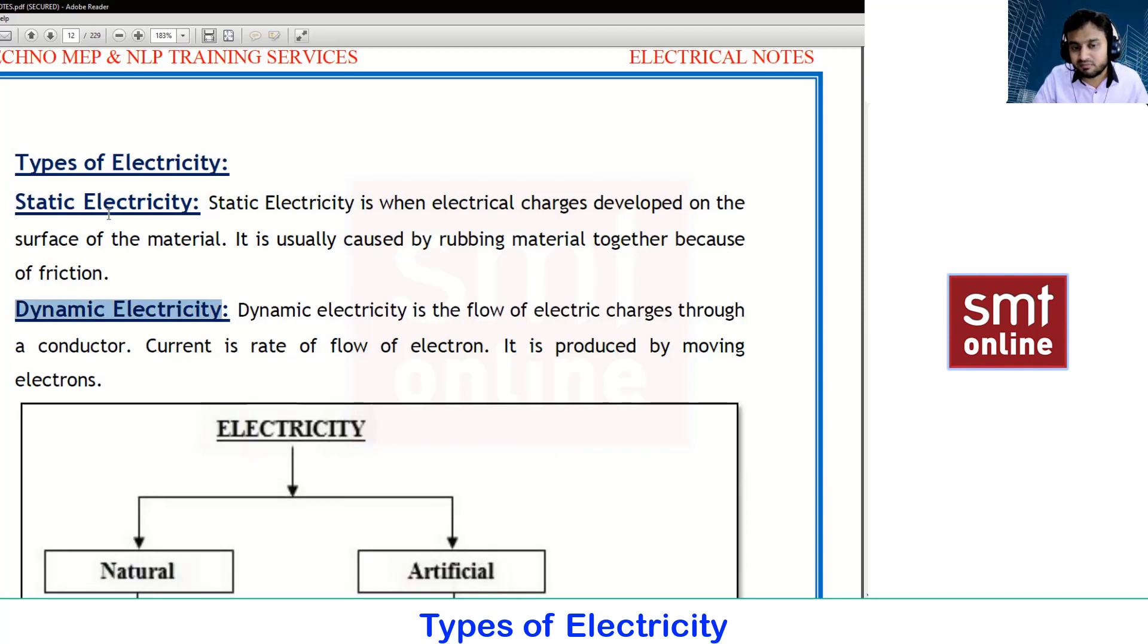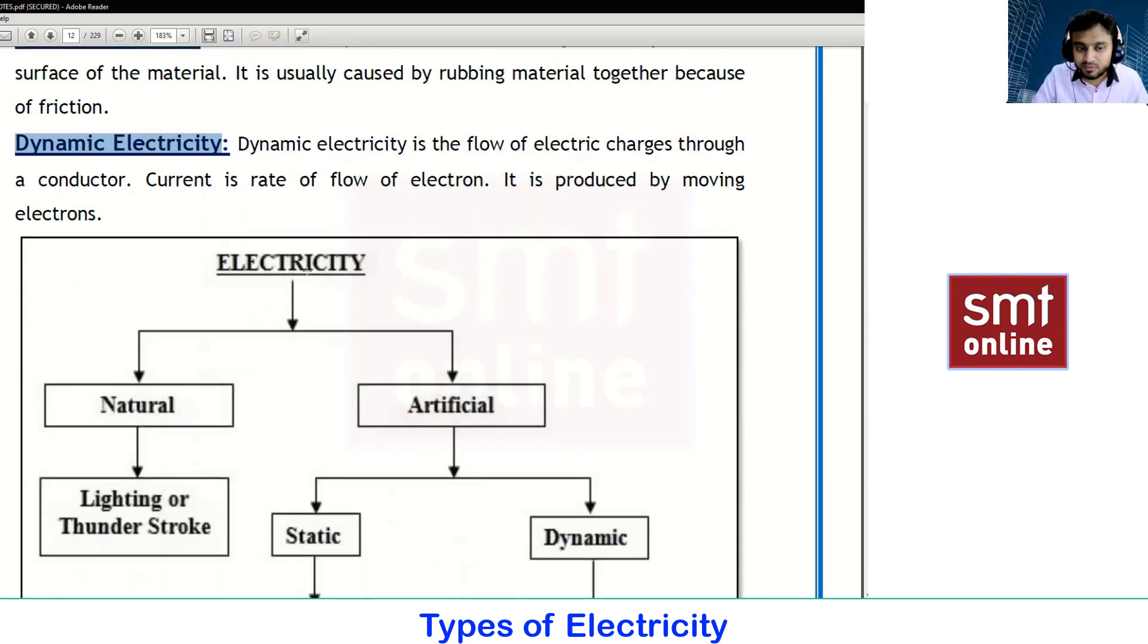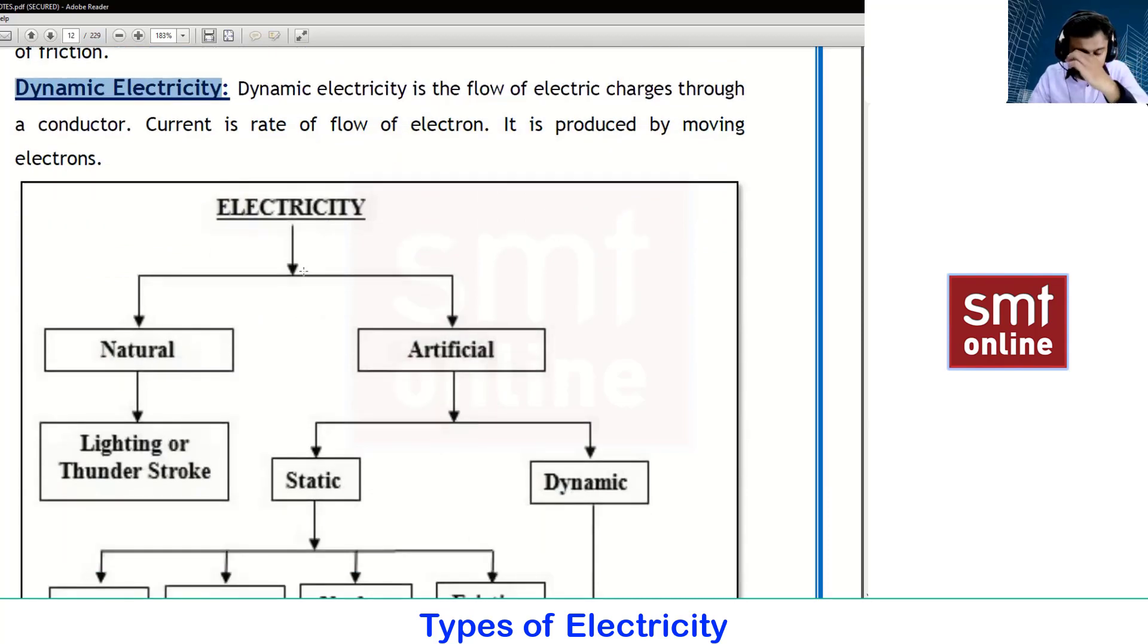Whatever electricity we have developed, if we are going to make a category based upon the flow of electrons, that is dynamic electricity. Here you can see with a simple flow chart.